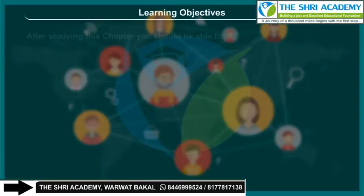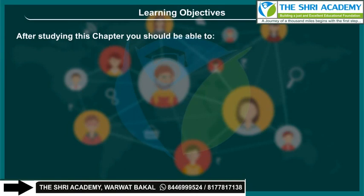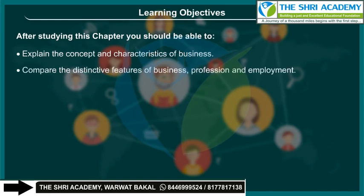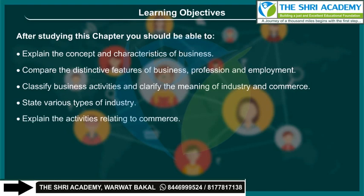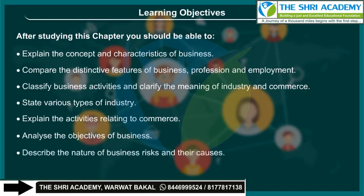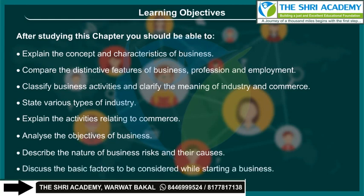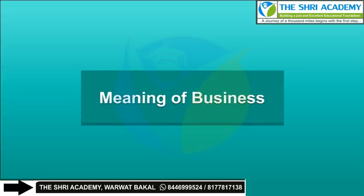Learning objectives: After studying this chapter, you should be able to explain the concept and characteristics of business, compare the distinctive features of business, profession and employment, classify business activities, and clarify the meaning of industry and commerce, state various types of industry, explain the activities relating to commerce, analyze the objectives of business, describe the nature of business risks and their causes, and discuss the basic factors to be considered while starting a business.